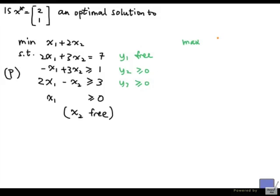So the dual problem is maximize 7y1 plus y2 plus 3y3. That's the objective function in the dual, subject to.